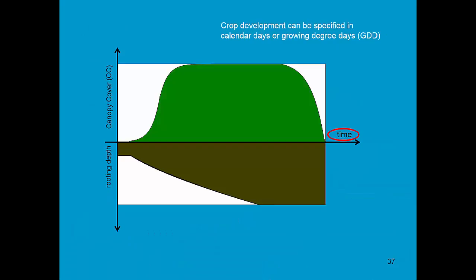Crop development can be specified in calendar days or in growing degree days. We can say that the time to reach maximum canopy cover is 75 days, but you can also express that as thermal units, for example 1000 growing degree days.